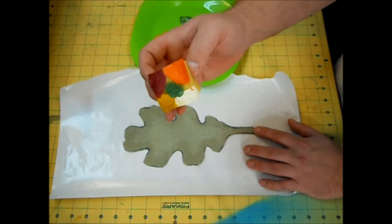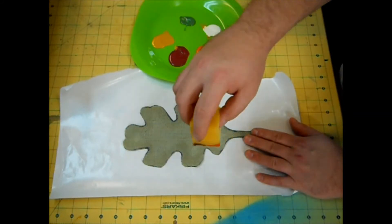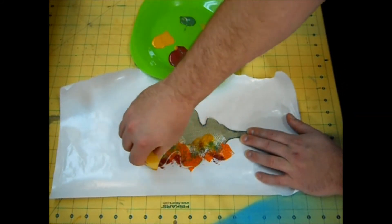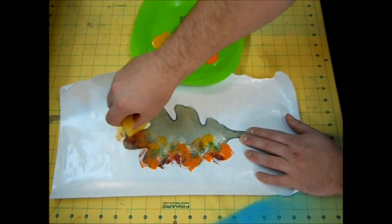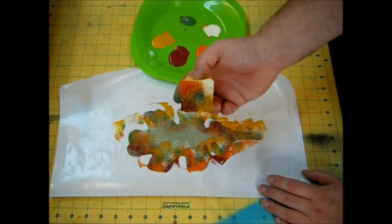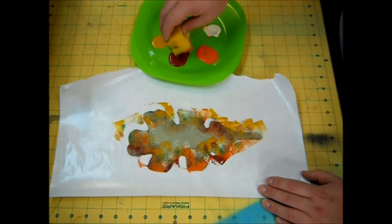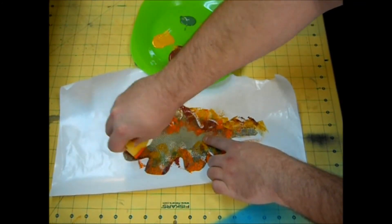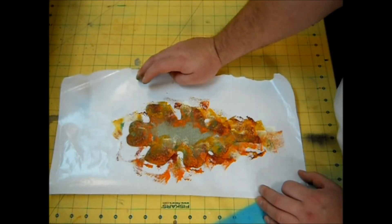Now you just want to go around the outside of your leaf in a pouncing motion. And as you can see right here, it got a little muddy, so you can just load up your sponge again and do it again. Now you should have something that looks like this. Now you want to set this aside and let this dry.